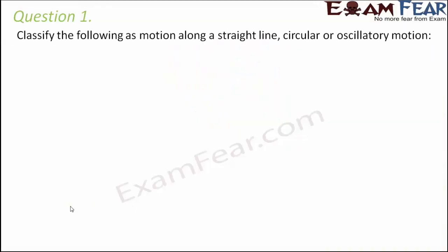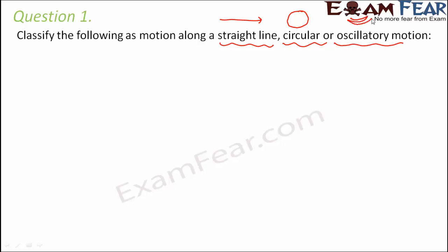Question number one: classify the following as motion along a straight line, circular, or oscillatory motion. Just to remind you - rectilinear motion is motion in a straight line; circular motion is motion in a circular path; and oscillatory motion is to-and-fro motion, like a pendulum, or the motion of your hands while running - they go forward and backward repeatedly, making it periodic or oscillatory motion.